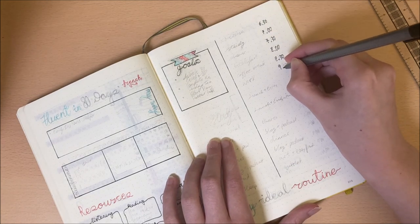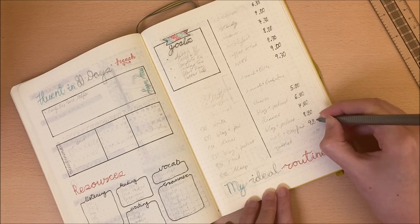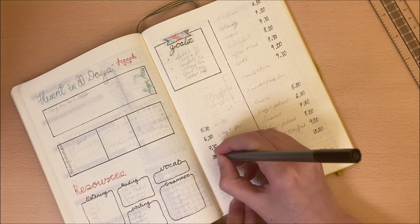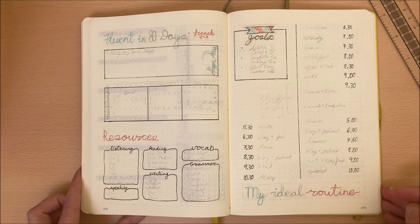My ideal routine runs from 6:30am to 10:30pm. This, again, is easily changeable depending on your own routines.